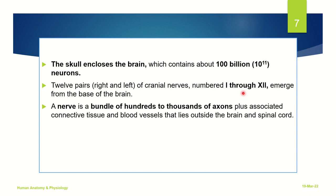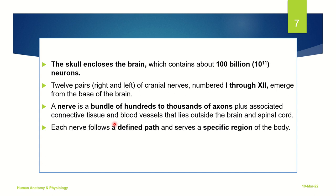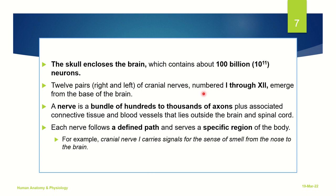A nerve is nothing but a bundle of hundreds to thousands of axons along with associated connective tissue and blood vessels that lie outside the brain and the spinal cord. Each nerve has a defined path and is responsible for serving a specific region of the body. For example, cranial nerve number 1, also called the olfactory nerve, is responsible for carrying the signal of sense of smell from the nose to the brain.